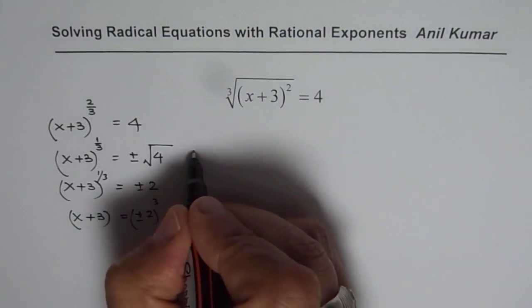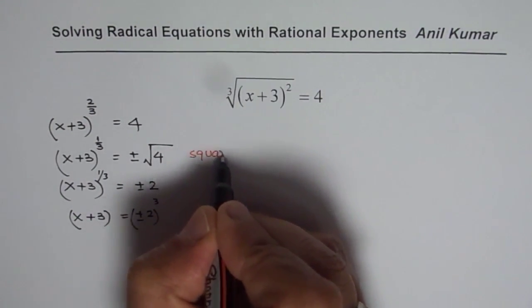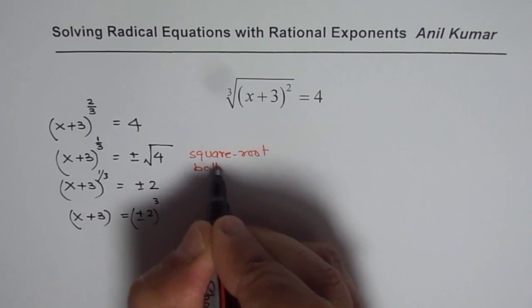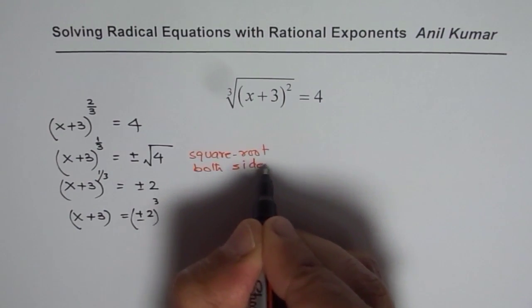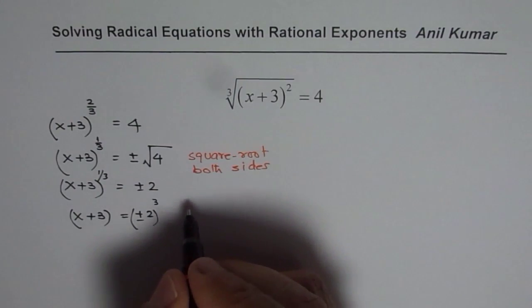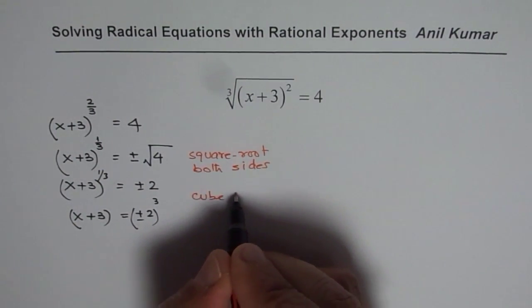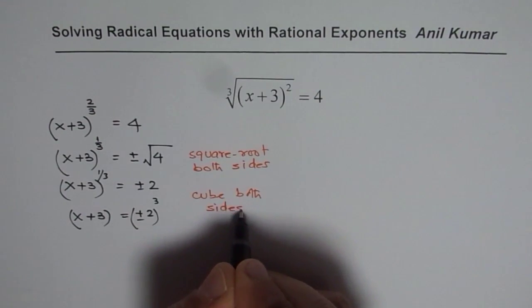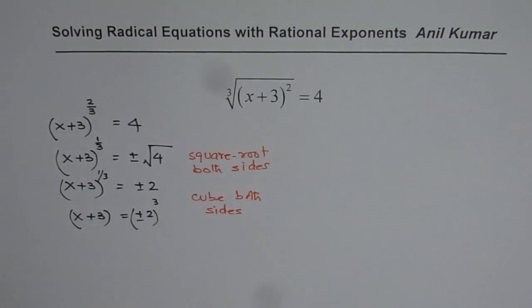So what we did was, at the first stage, we did square root both sides. Remember, whenever you do square roots, you have to take care of both positive and negative roots. And then you cube both sides. Whenever you are solving equations, you have to do same operations on both the sides.